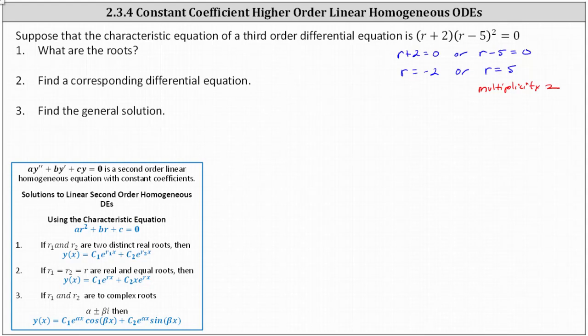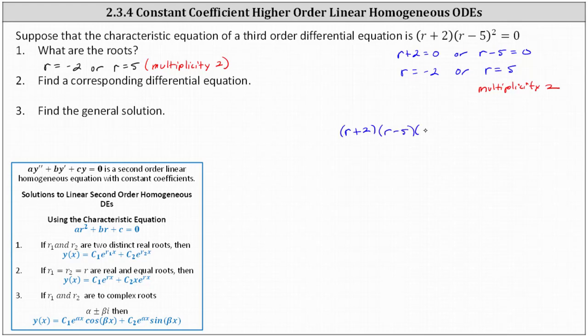Let's go ahead and record this on the left. For number two, we're asked to find a corresponding differential equation. To do this, we'll need to multiply out the left side of the characteristic equation. So we have one factor of r plus two and two factors of r minus five. There are no shortcuts here — we'll have to determine the product of two of the binomials, and then multiply that result by the third binomial. Let's multiply r minus five and r minus five first. When multiplying two binomials, we have four products.